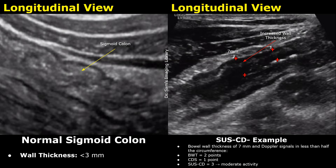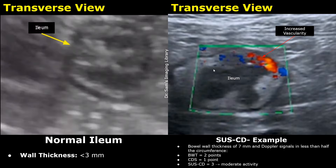Now let's look at an example using the SUSCD system. This is the sigmoid colon in the longitudinal plane with a bowel wall thickness of 7 mm. Since this is between 5 and 7 mm, it is given 2 points. For the ileum in this scenario, the color Doppler signals are seen in less than half the circumference, giving a CDS score of 1. Adding 2 points for bowel wall thickness and 1 point for color Doppler signal gives a total score of 3, indicating moderate disease activity.